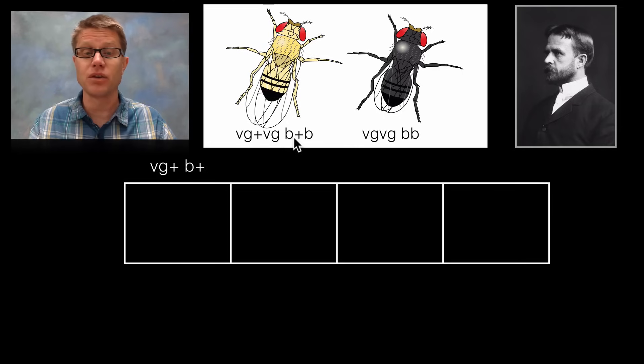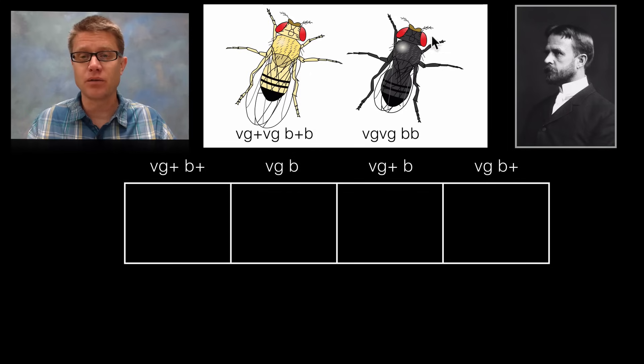You could have both of the wild type genes, or you could have both of those recessive mutant genes, or you could have a combination of the two. So you could have one wild, one recessive or vice versa. Now this parent over here only can give its recessive genes. We knew that there are only four possibilities that we could get out of this.